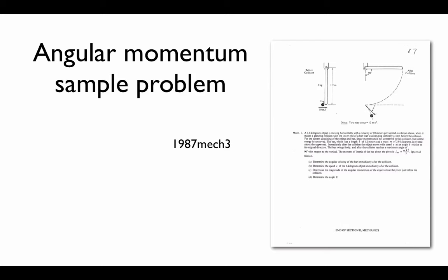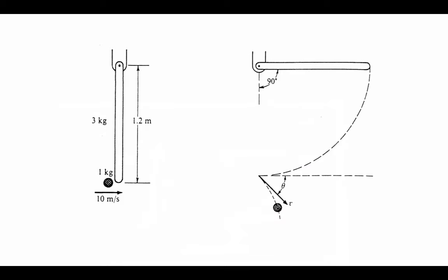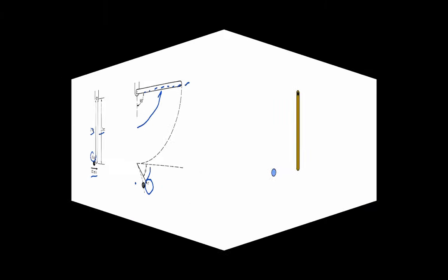If you look at the problem, we've got this really nice picture. I often like to start by having a look at the pictures, and we get a before and an after of some incident. We've got a ball coming in and it's going to hit a rod, and the rod is going to swing up. We're given some characteristics — the dimensions, the mass of the rod, the mass of the ball, how big the rod is, and how fast the ball is going beforehand. Afterward, we know that the rod swings up until it's horizontal, and that's going to be a crucial detail.